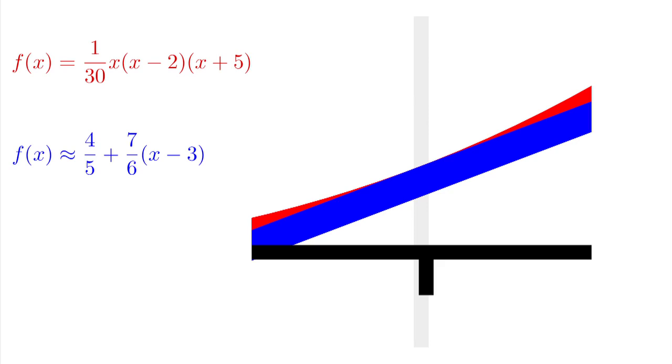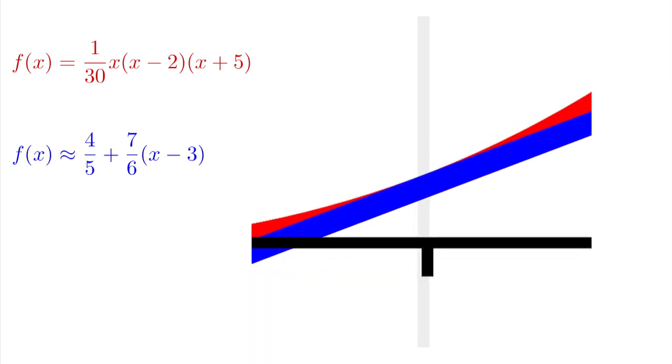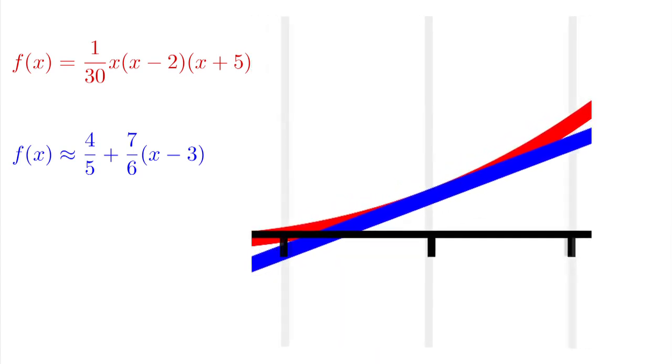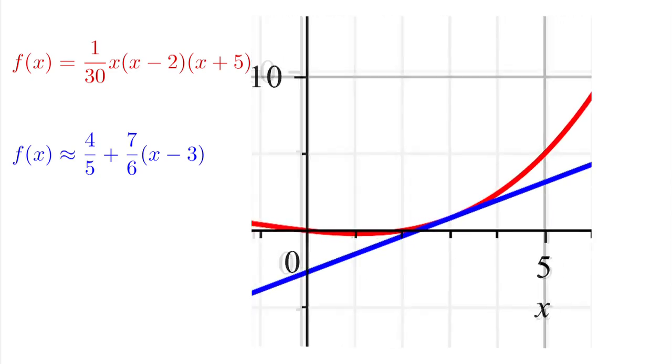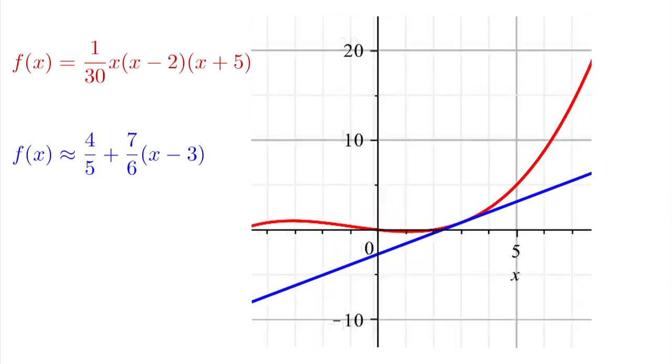Here we see the tangent line drawn in blue, the function drawn in red. The graphs demonstrate our mathematical proof that a tangent line is a good approximation near x=3. But the further we get from x=3, the worse the approximation seems.